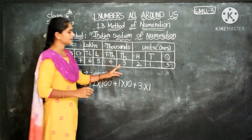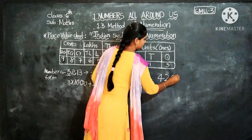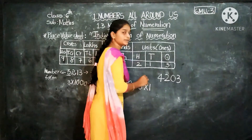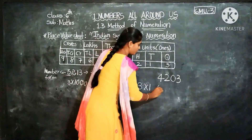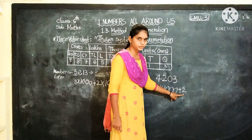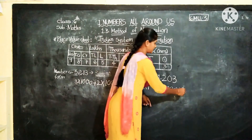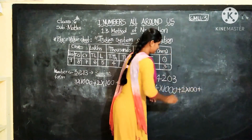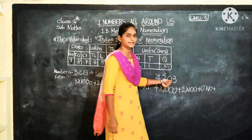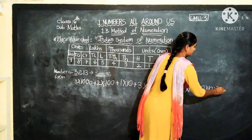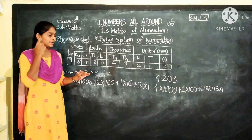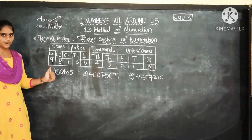Let me take one more example: 4,203. The expanded form is: 4 in the Thousands place, so 4 × 1000; plus 2 in the Hundreds place, so 2 × 100; plus 0 in the Tens place, so 0 × 10; plus 3 in the Ones place, so 3 × 1. This is the expanded form.